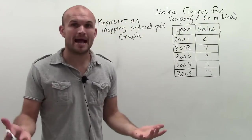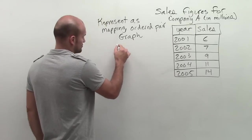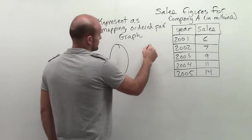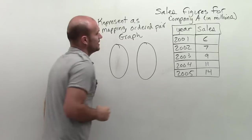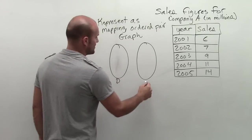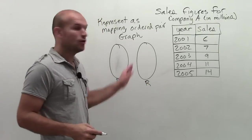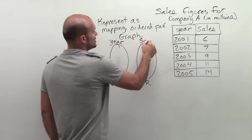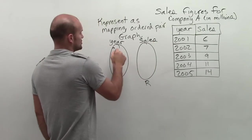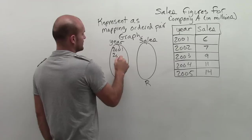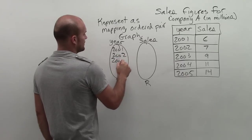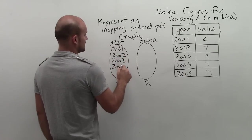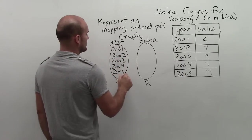So remember in a mapping, we do the same thing. We have kind of two circles. Alright, and what we do is here's my domain, and here's my range. Well, my domain is going to be the year, and my range is going to be the sales. So I'll just say 2001, 2002, 2003, 2004, and 2005.